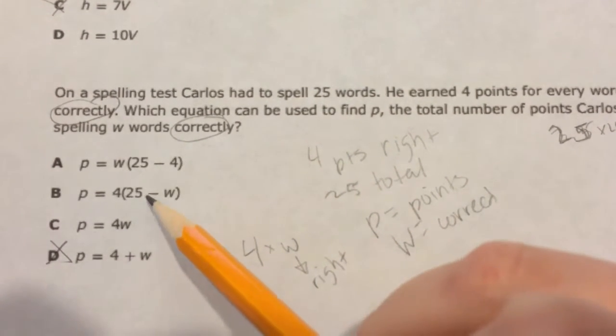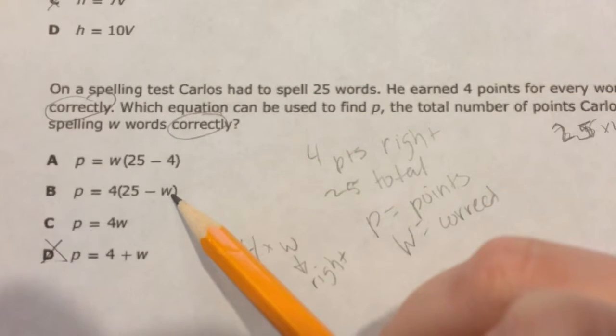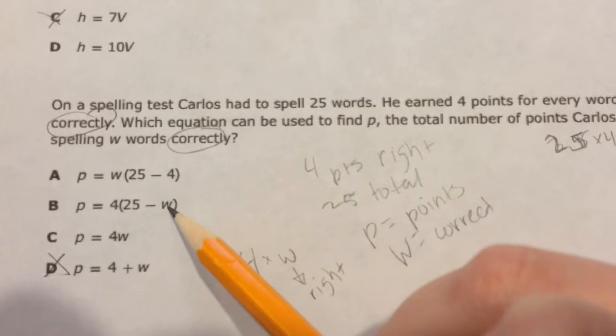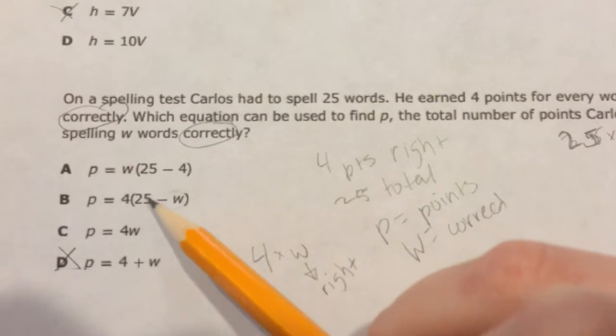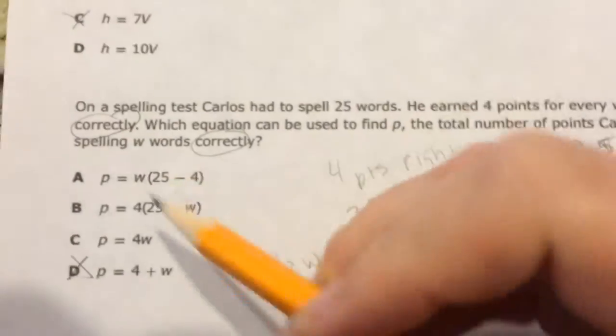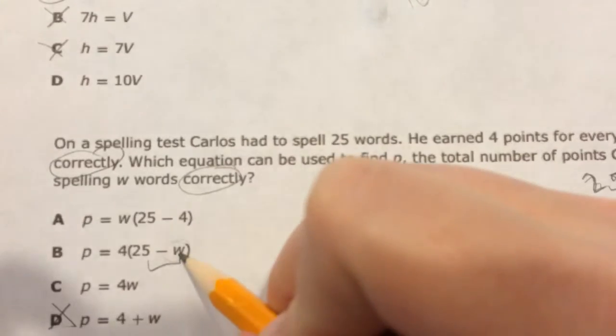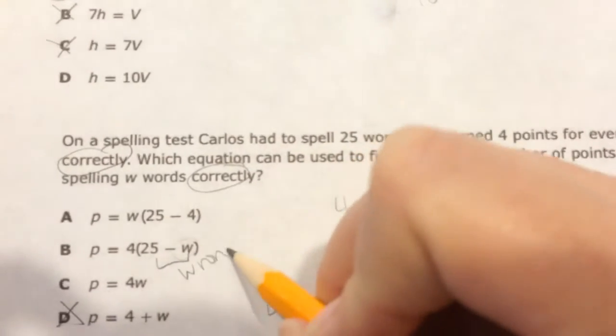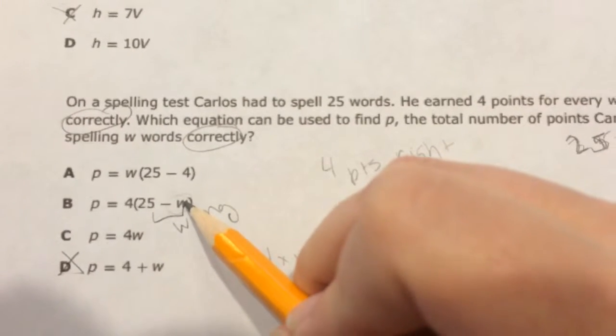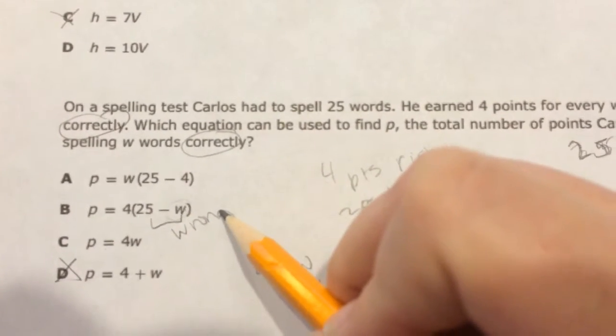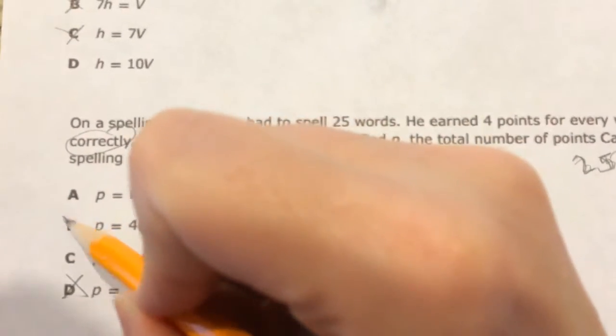Points equals 4 times 25 minus W. Well, W is what he got right. So if I do 25 minus what he got right, that would be what he got wrong. 25 minus the W, that would be, there's 25 total, and W is what he got right. That would equal the number he got wrong. Well, I don't want that, so that can't be right.